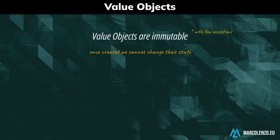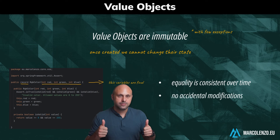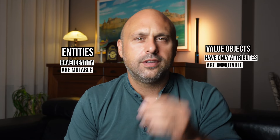Value objects are also immutable, ensuring that once they are created, their state cannot be altered. This immutability guarantees that the quality of value objects remains consistent over time, preventing accidental changes that could lead to subtle bugs and inconsistencies in the system. In a nutshell, entities have identity and are mutable, while value objects have only attributes and are immutable.